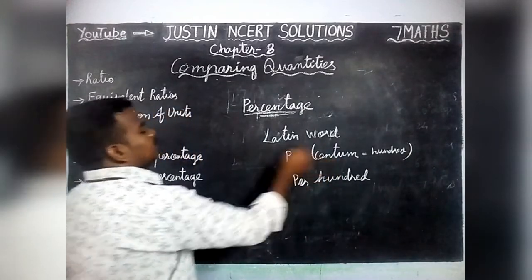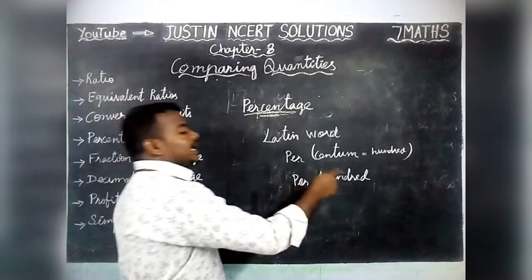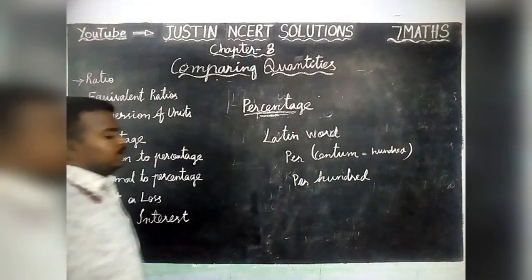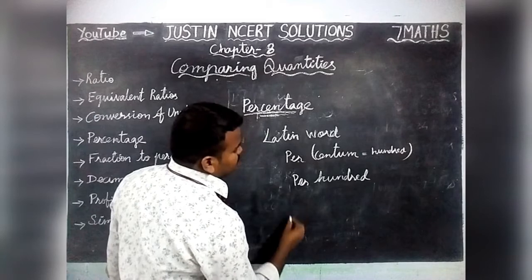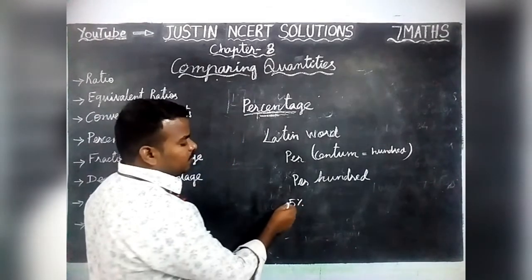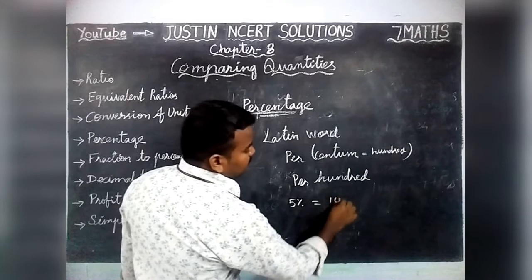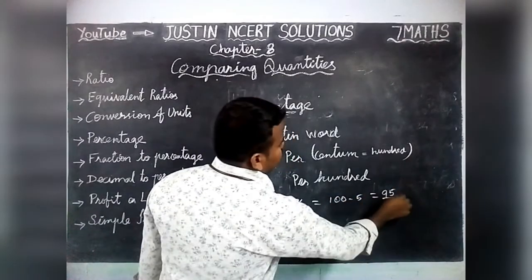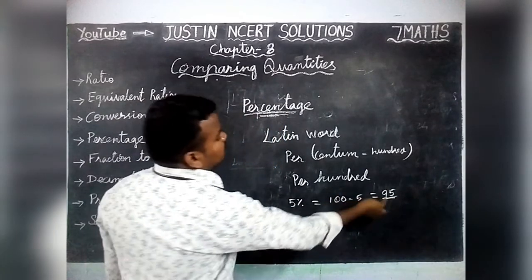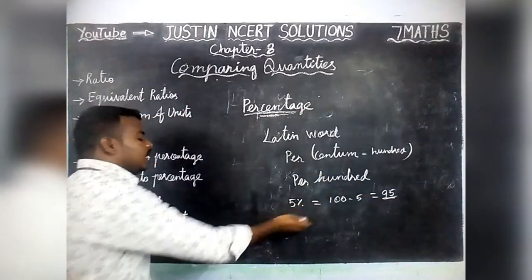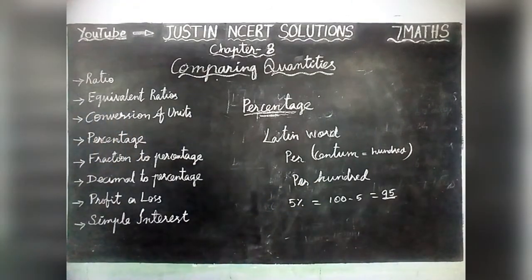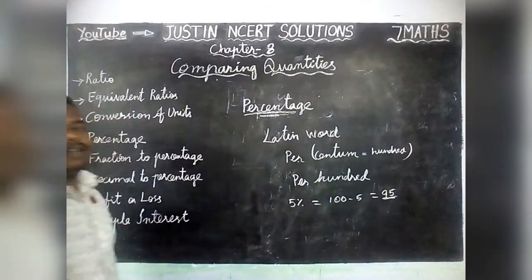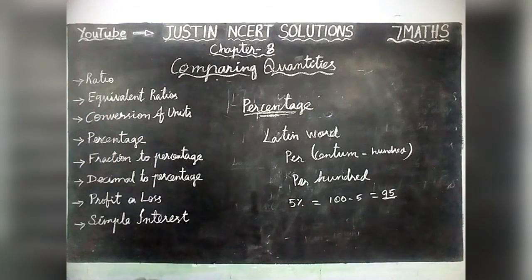Percentum is a Latin word meaning 'per hundred.' Everything is calculated per hundred, that's why it is called Percentage. For example, if they are giving 5% Discount — the meaning of 5% is: per hundred rupees, five rupees is discount, so we will get ninety-five rupees. Per hundred, five percent discount. If it is thousand rupees or one lakh, everything comes under this percentage calculation.